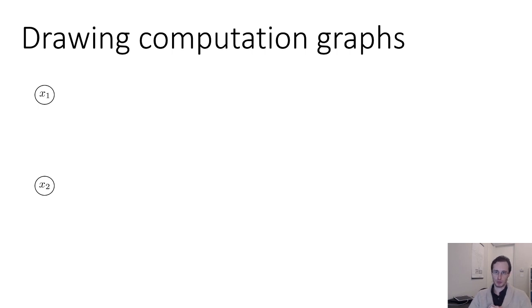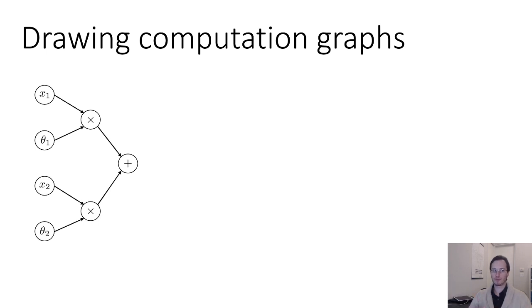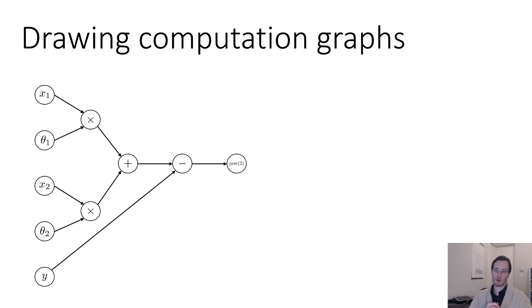Here's what a computation graph looks like. Let's say we have two inputs, x1 and x2 — a vector with two dimensions — and two parameters, theta1 and theta2. A computation graph is a directed acyclic graph where nodes correspond to mathematical operations. For example, we have two multiplication nodes: we compute x1 times theta1 and x2 times theta2. Then we add those results together. We also have a ground truth label y, and we subtract y from that computation and square the corresponding quantity.